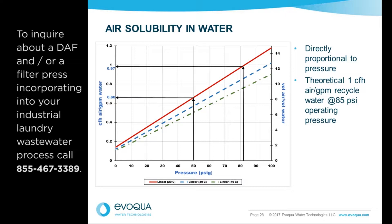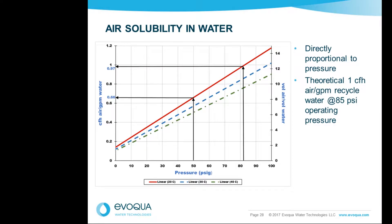The key feature of any DAF is the white water system, which uses pressure and mixing energy to force air into solution with water — typically using a recycle stream from the DAF effluent. Air solubility in water is affected by both pressure and temperature. The amount of air that goes into solution is directly proportional to the pressure exerted, with higher pressure putting more air into solution. This pressure is provided by a recycle pump operating between 50 and 100 psi. Also, higher wastewater temperature lowers the solubility of air in water.